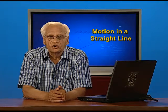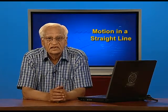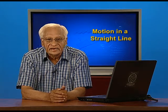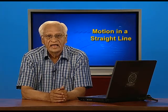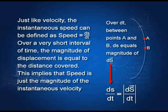If the velocity is not constant, then we have to define what is known as instantaneous velocity at a point. That is defined as vector v equal to the differentiation of vector S, that is dS/dt. Just like the velocity, the instantaneous speed is also defined as ds/dt.